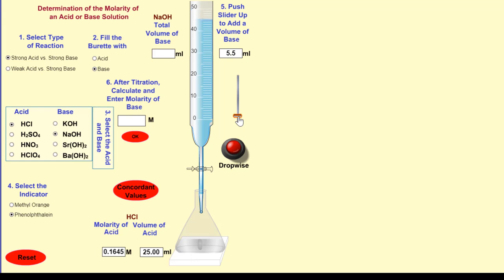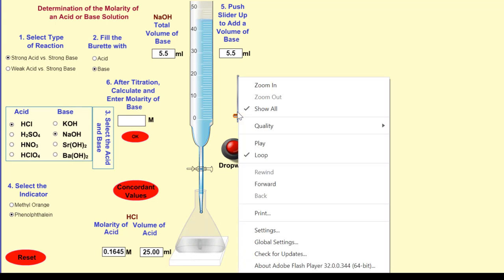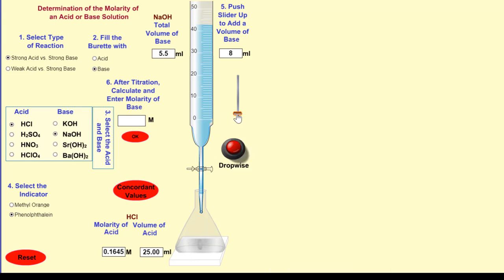So let's put some volume in. Let's put 5.5 milliliters in. Put a little bit more in. 8 milliliters. 10.5. 14.5. Did you see that color change?